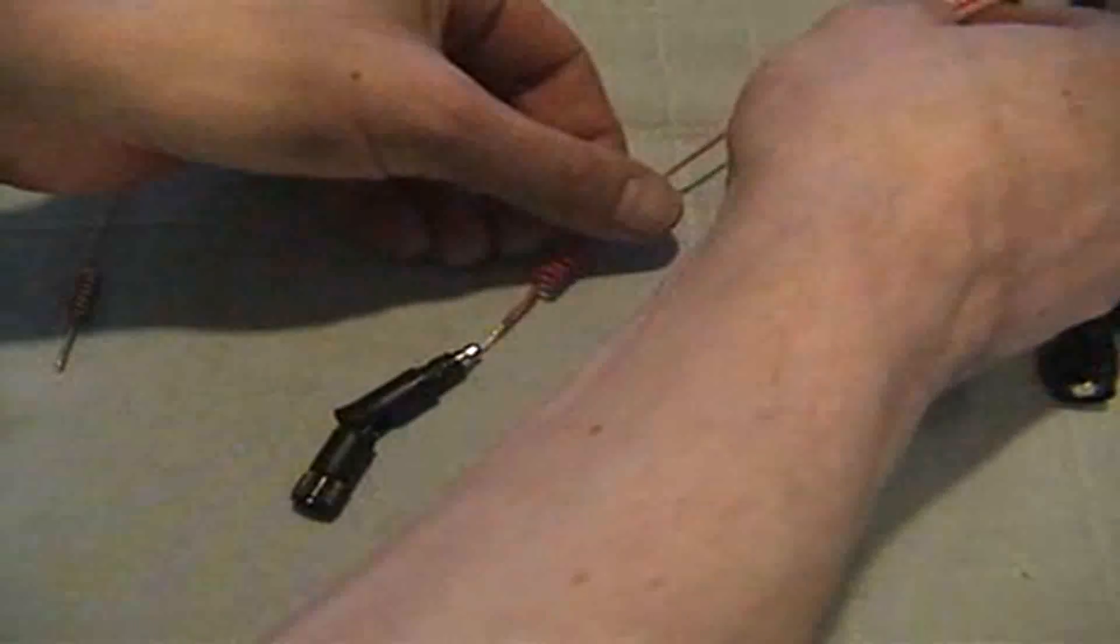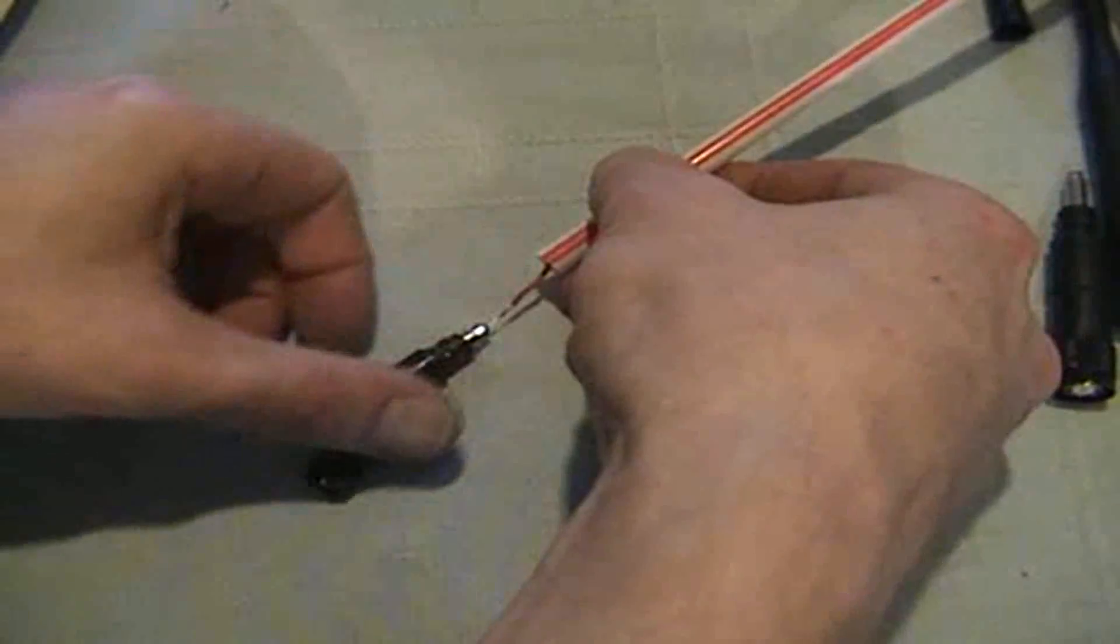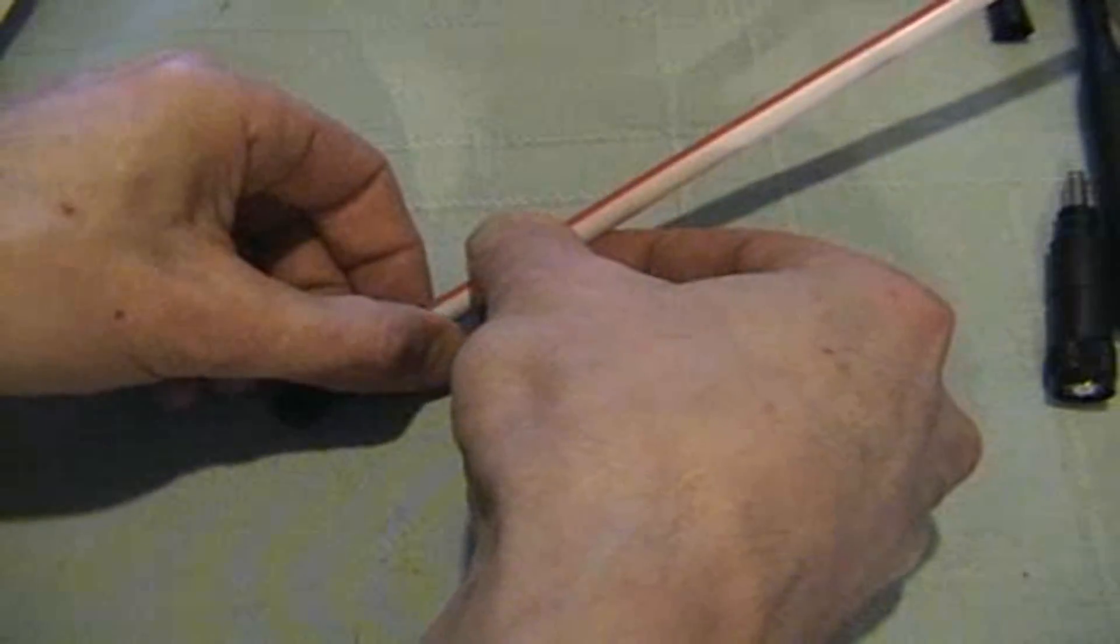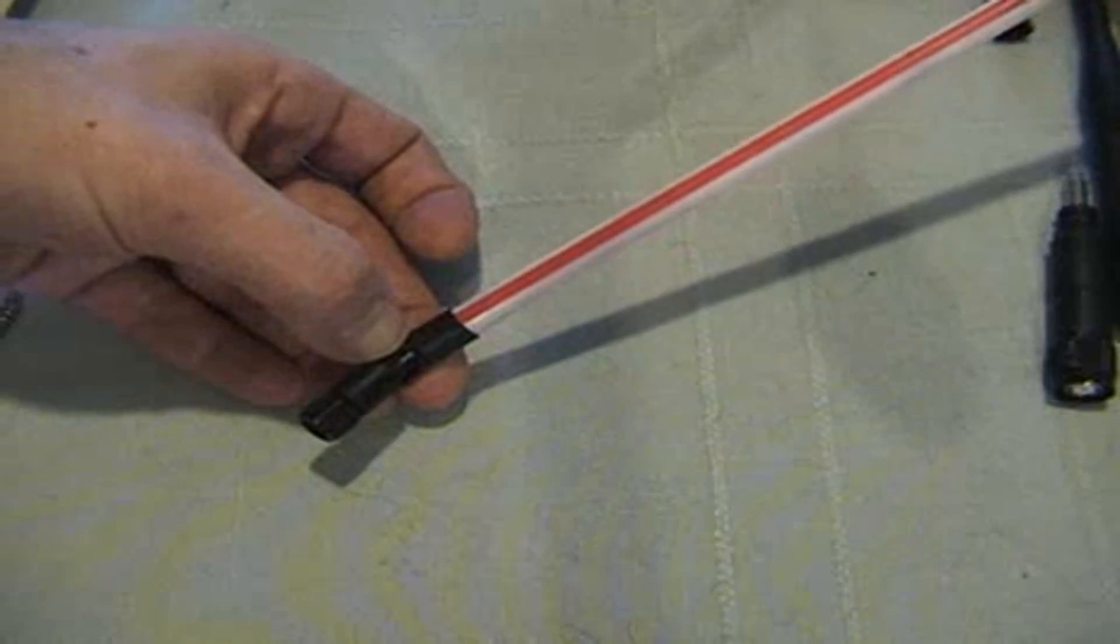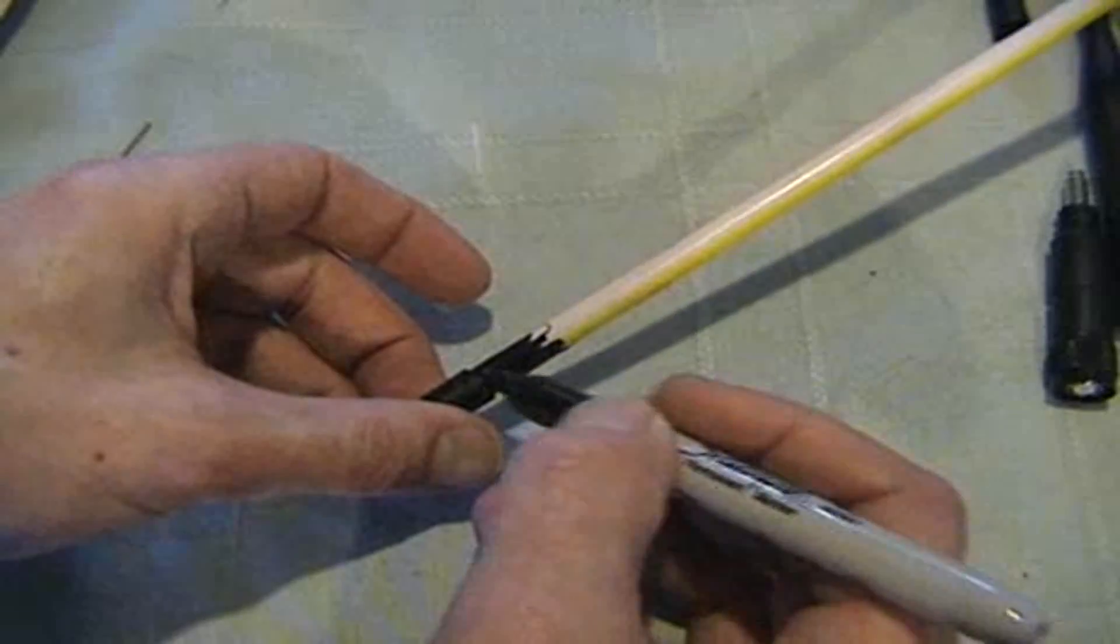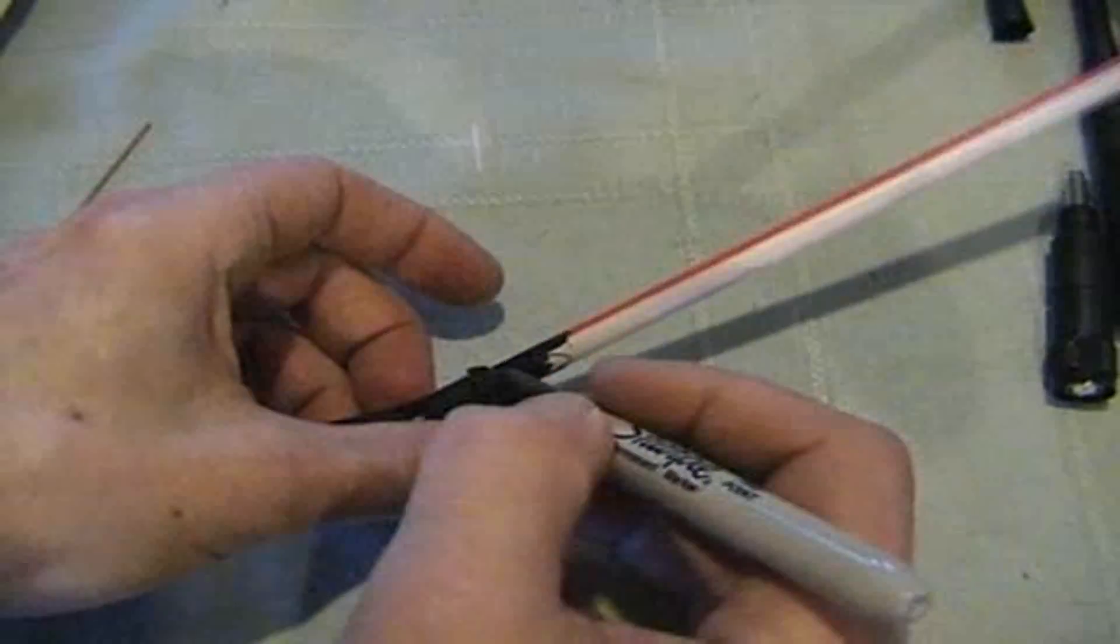You can buy these larger diameter drinking straws at a grocery store, or simply get one at a fast food restaurant. They're an absolutely perfect match for your original base and fit snugly. Using some black paint or a black magic marker to color the straw will give you a nice professional look.